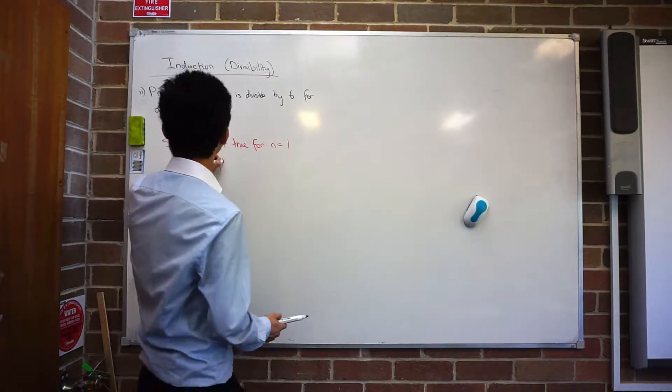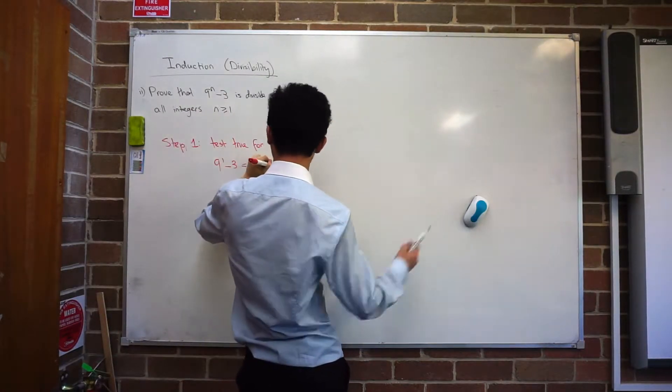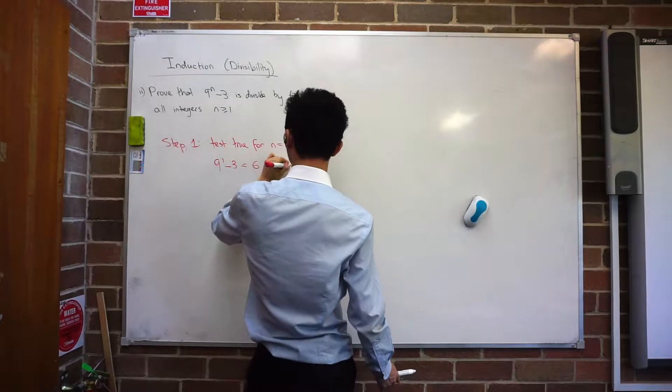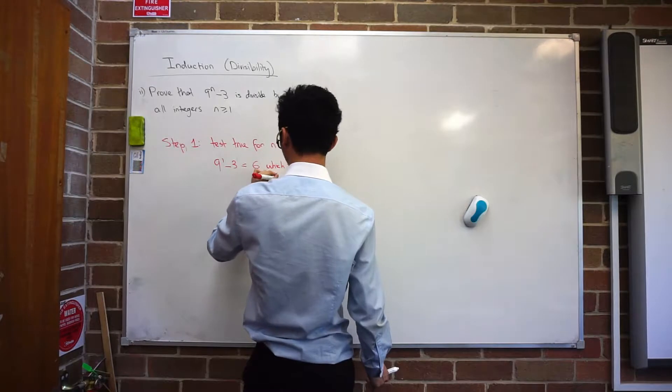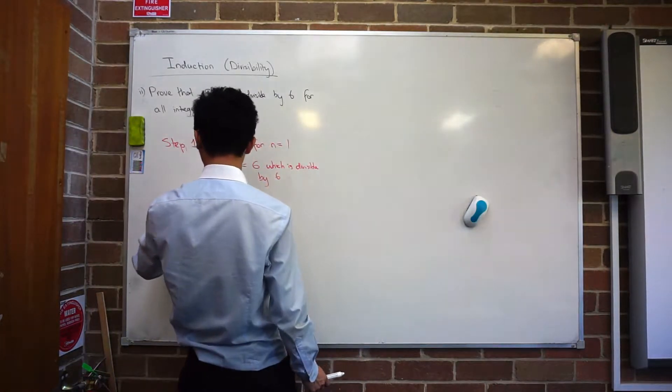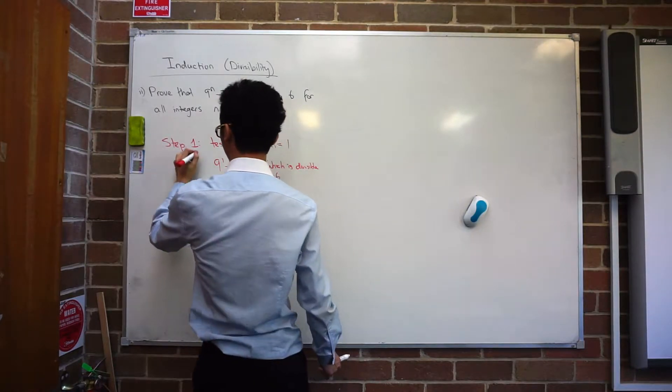So we just got 9 to the 1 minus 3, which equals to 6. And that's obviously divisible by 6. And therefore true.